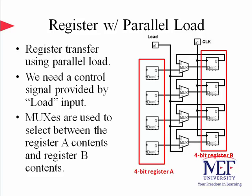Therefore, we use a control input called load. When the load is set to 1, we select the contents of register A, and hence at the appropriate pulse of the clock, register A contents shall be delivered to register B, where the contents of register A stay unchanged. When the load is 0, meaning there shall be no transfer operation, the MUX will select the output of register B as the input to retain its value at each clock pulse.